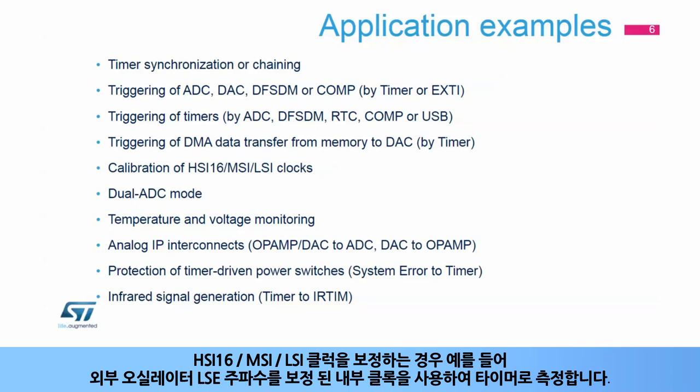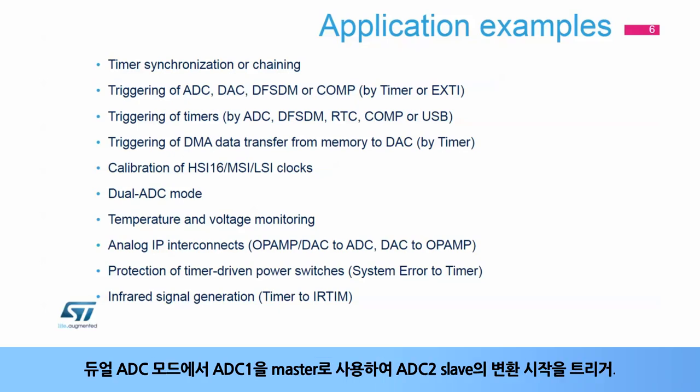Triggering a DMA data transfer from memory to the DAC by a timer to allow a frequency-controlled conversion. Calibrating HSI-16, MSI, or LSI clocks — for example, measuring the external oscillator LSE frequency by a timer clocked by the calibrated internal oscillator. Dual ADC mode, using ADC-1 as the master to trigger a start of conversion for the ADC-2 slave.